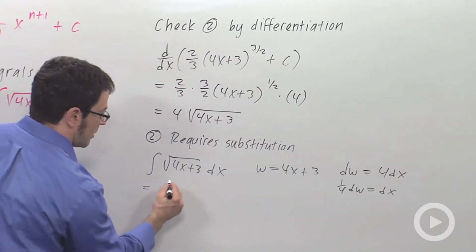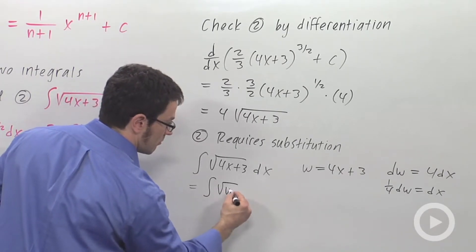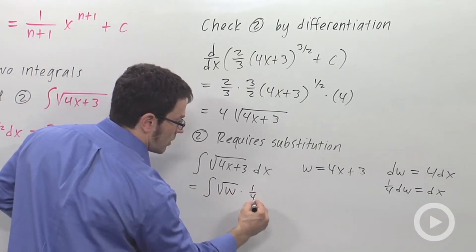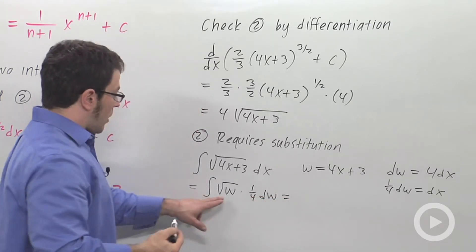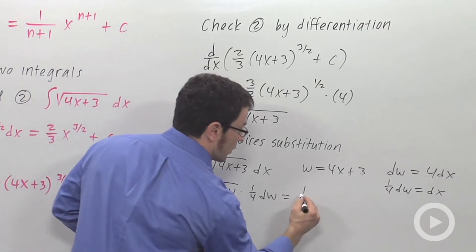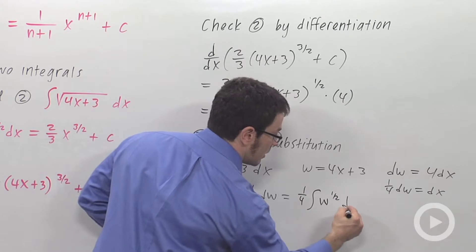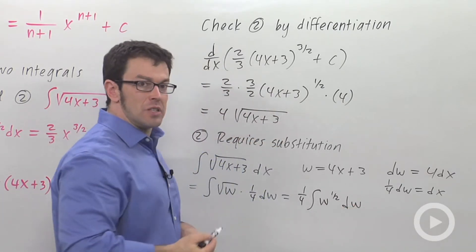So I get the integral of the square root of w times 1 quarter dw. Now I can switch this to w to the 1 half and pull the 1 quarter out in front. It's 1 quarter w to the 1 half dw. And now I can use the power rule.